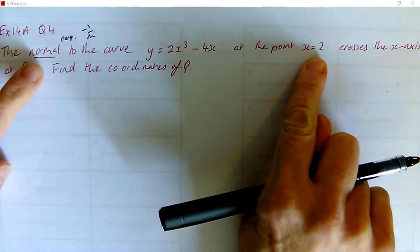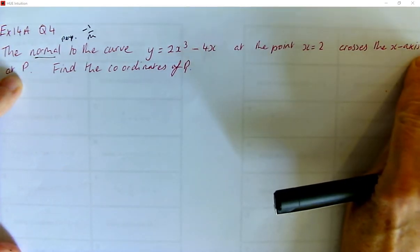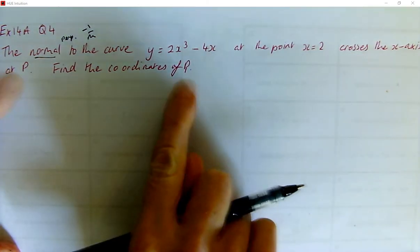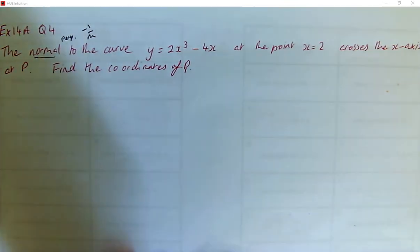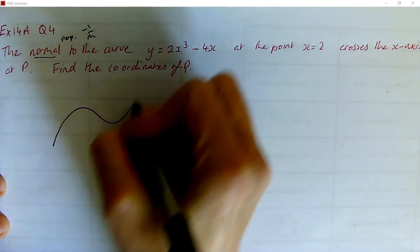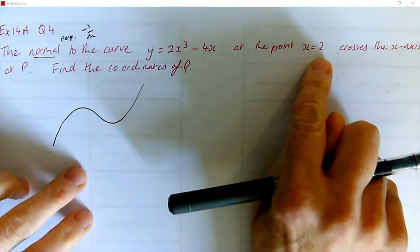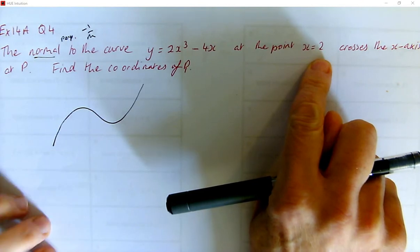So the normal at that point crosses the x-axis at P. Find the coordinates of P. So I'm going to do a rough sketch to get some ideas. I know I've got a cubic, it's an uphill cubic. I don't really know where the two is going to go, so I'm just trying to think.